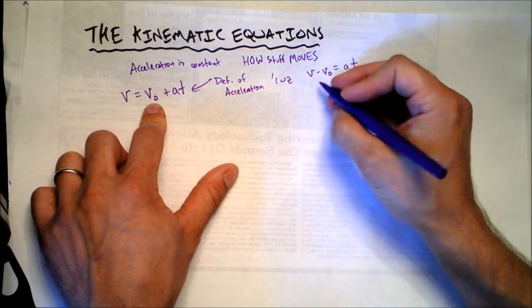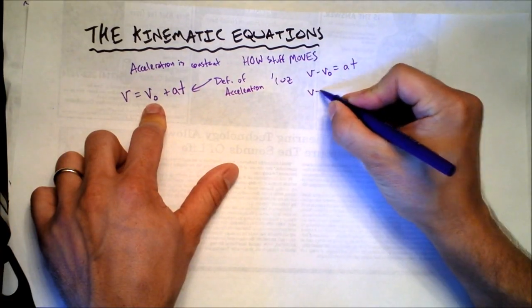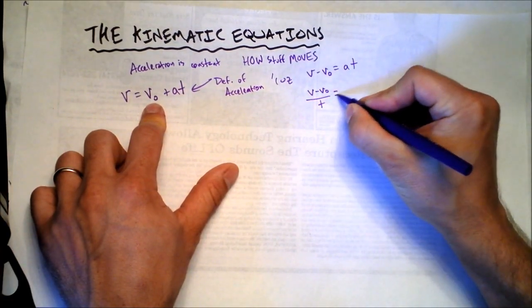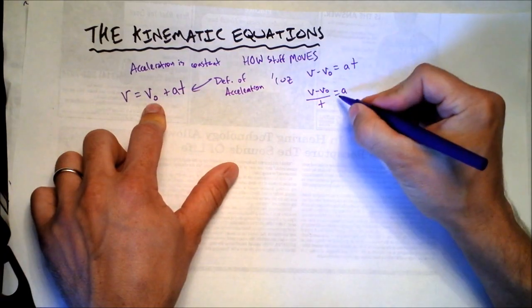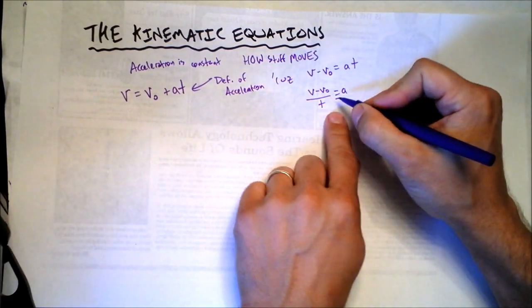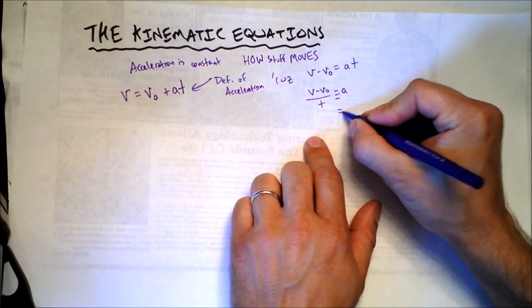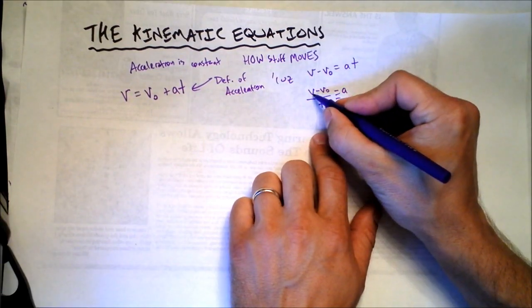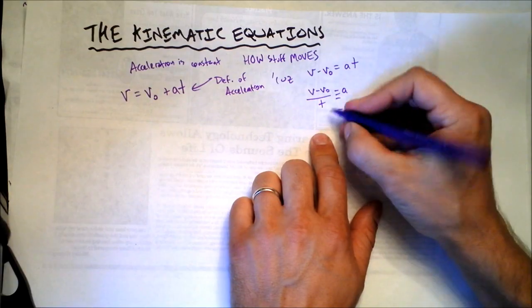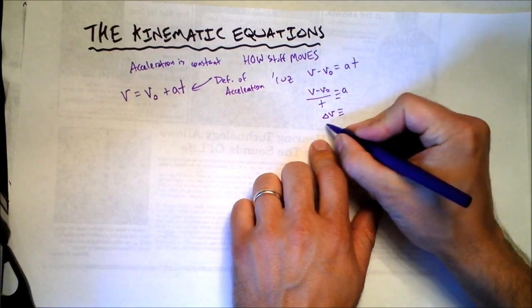I'm going to put a triple line right here because this is what acceleration means. This is v minus v naught, which is change in velocity, and that should be change in time.